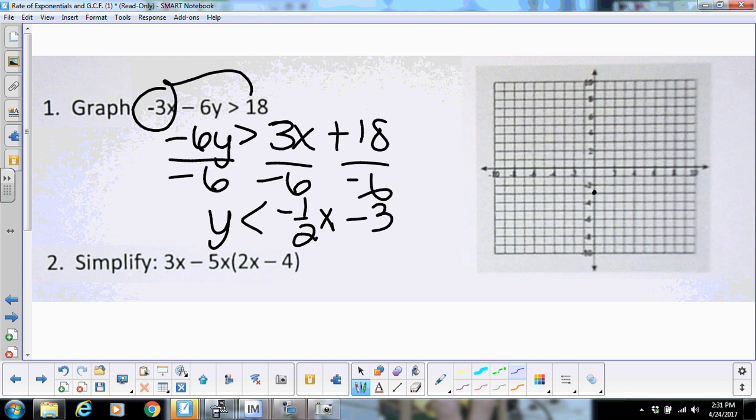So I'm going to start down here at minus 3, and then go down 1 and right 2. That is going to give me a dotted line through there, and then that is going to be less than, so I'm going to shade below.